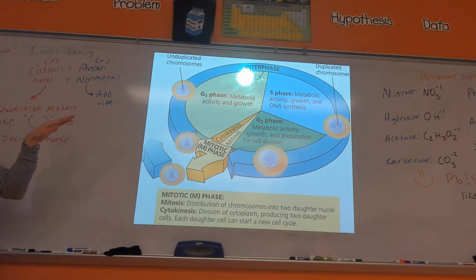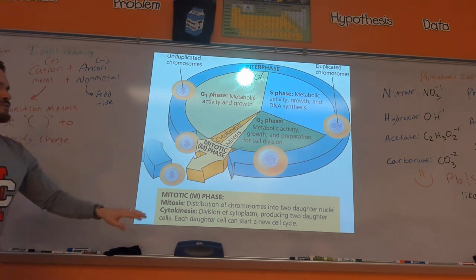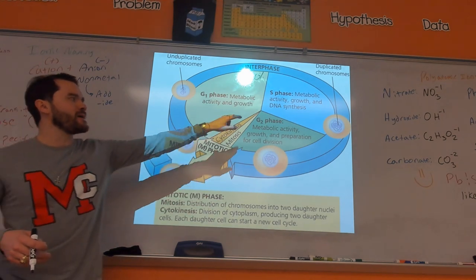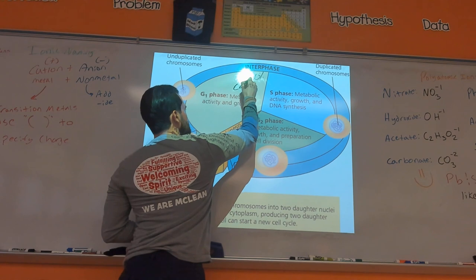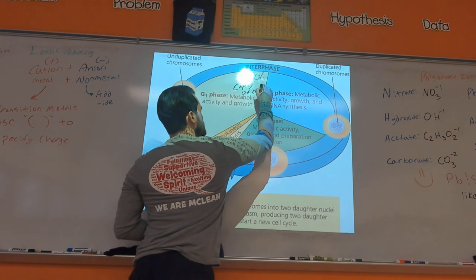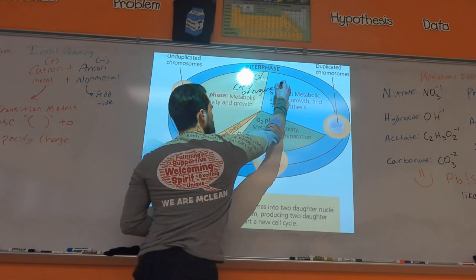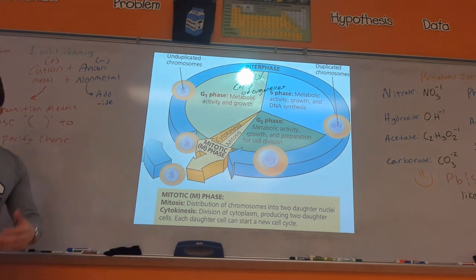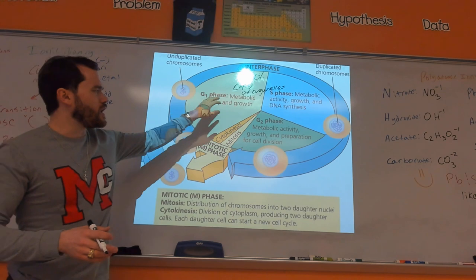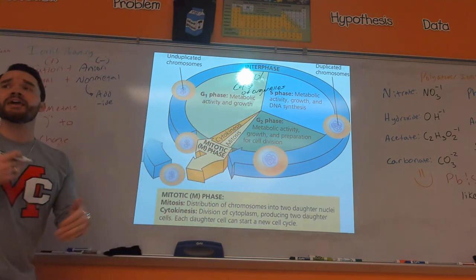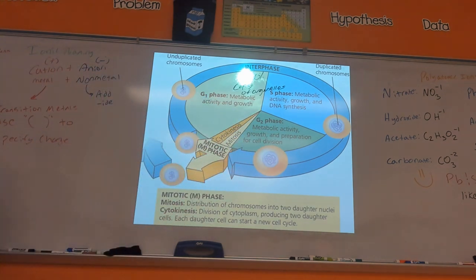If you're going to divide the cell, you have to make a copy of the DNA, but you often have to make a copy of the organelles too. Like if there are 20 mitochondria in a cell, you've got to make 40 because you're going to have to divide up those organelles into the new cells. So during G1, S, and G2, cells are also making copies of the different organelles and cell parts.